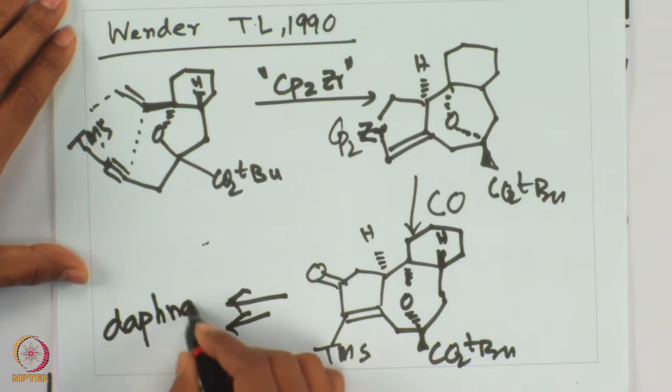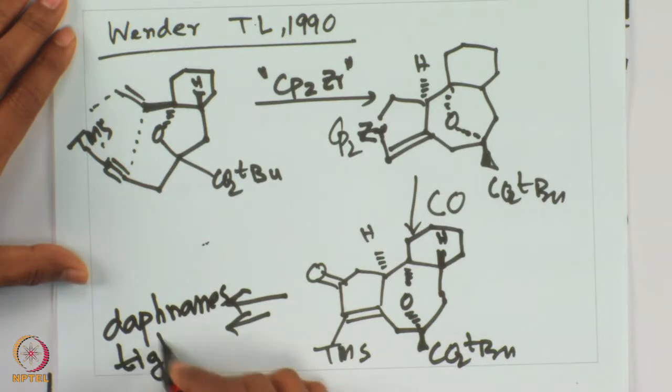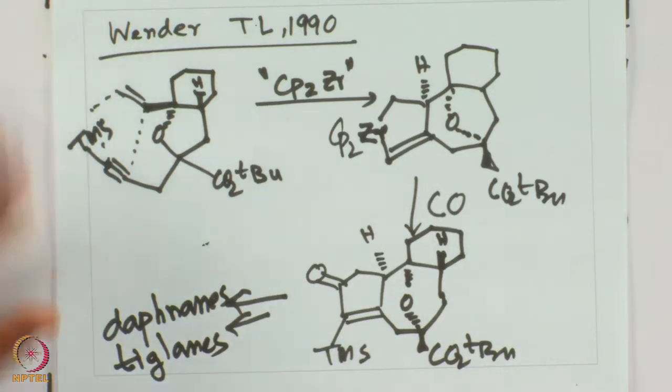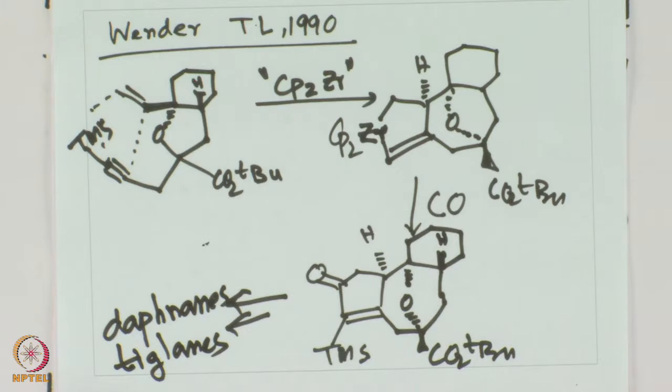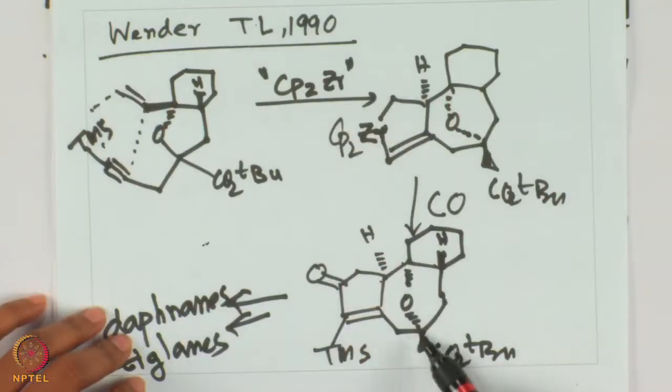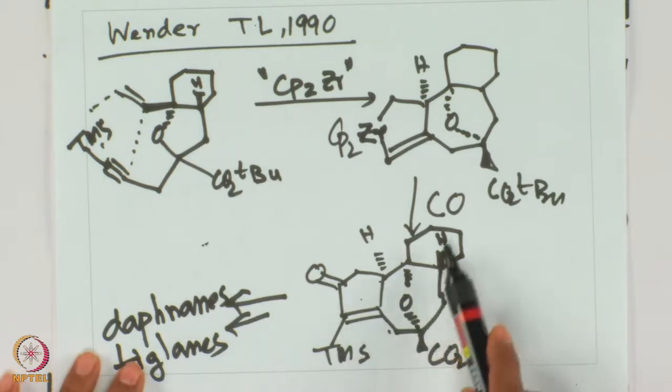The natural products daffinines and tiglenes can be synthesized by utilizing this technique. This is a very powerful method — although not ideal for tolerating diverse functional groups, the ester is tolerated here. Olefin and alkyne are put together to form a five-membered ring coupled with a 7-membered heterocycle, giving a 5-7-6 membered fused ring system overall, which is useful for synthesizing a number of natural products.